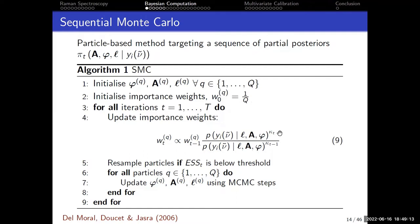We then choose a power kappa that we raise our likelihood function to. Kappa starts at zero - when we're at the prior - and equals one when we reach the posterior. A key advantage of SMC is that kappa can be chosen adaptively. Rather than incrementing kappa by 0.1 each iteration, you need very small steps when first introducing the likelihood, then bigger steps as things warm up. Choosing kappa adaptively is very beneficial and helps SMC converge.